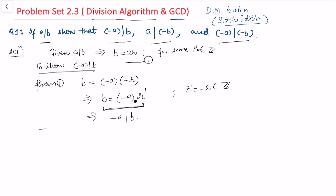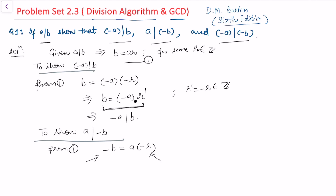To show a divides −b: from equation (1), we write −b = a·(−r). Since −r is an integer, we can directly say a divides −b. That proves the second assertion.